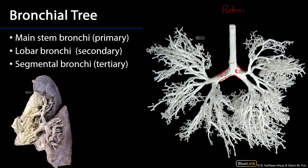The right primary bronchus is going to have three secondary bronchi. There is one secondary bronchus, there is the second secondary bronchus, and a third secondary bronchus. The secondary bronchi which are going to serve the middle and inferior lobes share a common conductive pathway known as the bronchus intermedius. On the left side there are two secondary bronchi. The secondary bronchus that serves the superior lobe is also going to serve the lingula of the lung, which would be homologous with the middle lobe of the right lung.